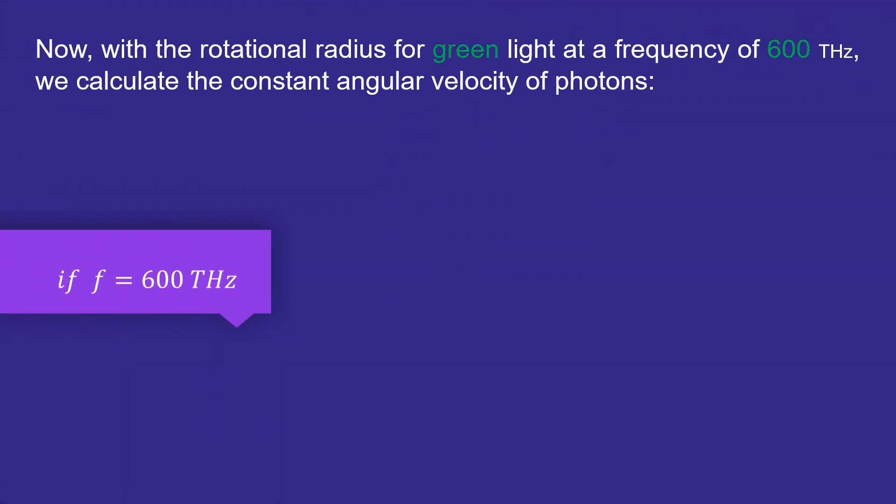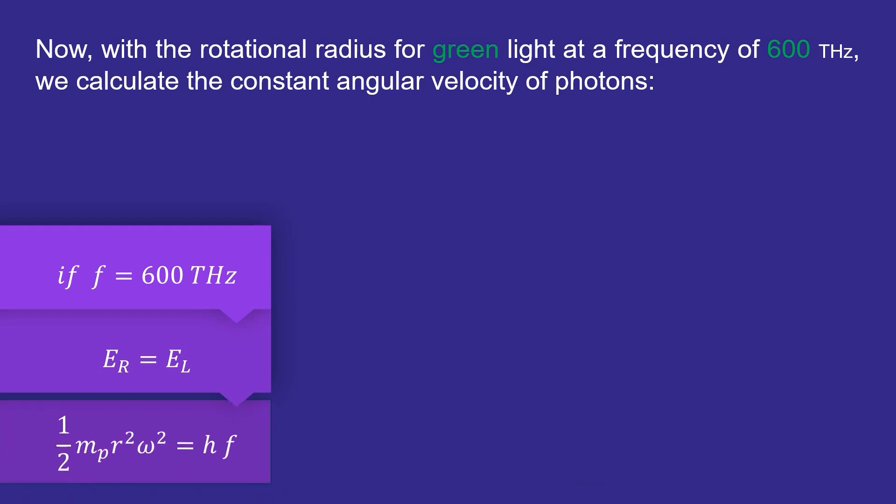Now, with the rotational radius for green light at a frequency of 600 terahertz, we calculate the constant angular velocity of photons.